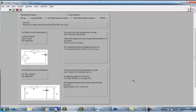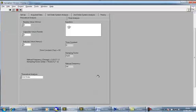Here on the Theory tab, we have the circuit diagrams and the equations you may need. The Theoretical Analysis tab allows you to place your true component values to get the theoretical transfer function, time constant, damping factor, and natural frequency. This can then be used in analysis and comparisons.